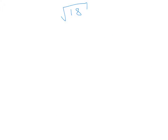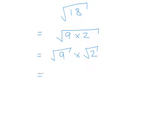For example two, simplify the square root of 18. We need two numbers that multiply to give 18, with one being a square number. The factor pairs are 1 and 18, 2 and 9, and 3 and 6. Since 9 is a square number, I write 18 as 9 times 2. Applying our property, I split this into the square root of 9 times the square root of 2. The square root of 9 is 3, so the answer is 3 root 2.